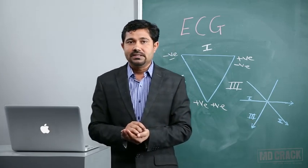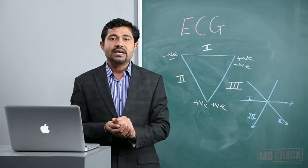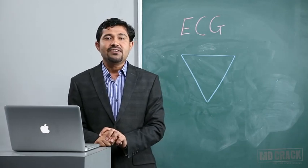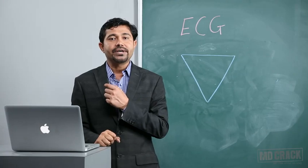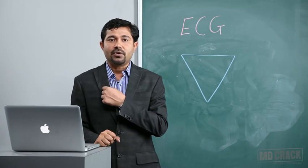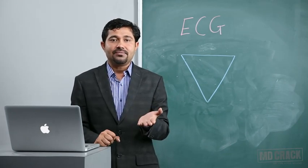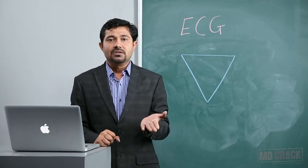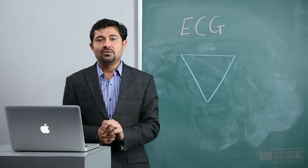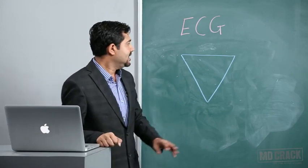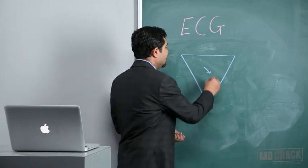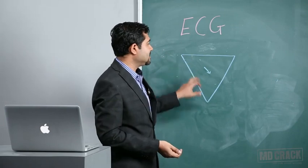Now we will go to the unipolar leads. These were the 3 bipolar leads. Unipolar leads, as the name suggests, calculate the potential changes at a single point. For that, if we attach an active or exploring electrode at that single point, we need a negative electrode, a reference electrode, or a zero-potential electrode. How do we construct a zero-potential electrode? This is where Einthoven's triangle is useful. Einthoven's law states that in a volume conductor, if the electrical vector is in the center, the summation of the voltage at the three angles equals zero.